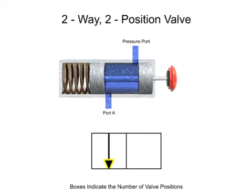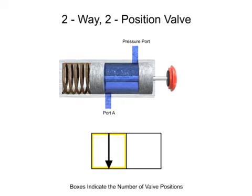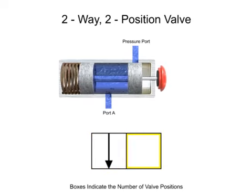A solid arrow indicates the direction of liquid flow. The first position of this valve allows fluid to flow from the pressure port to port A, so an arrow is drawn in the first box to indicate fluid flow. A T indicates that a port or way is blocked or closed. This valve's first position has no ports blocked, but its second position blocks both. Therefore, two T's are added to illustrate the lack of fluid flow in the second position.